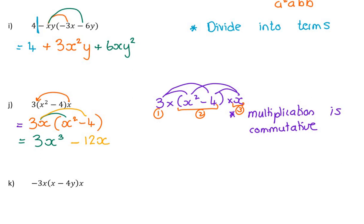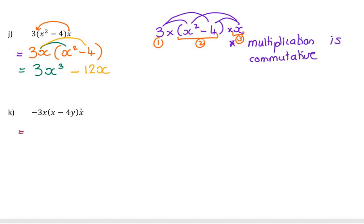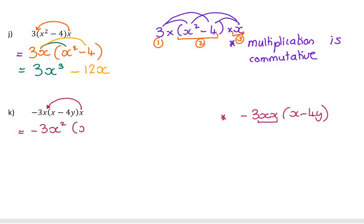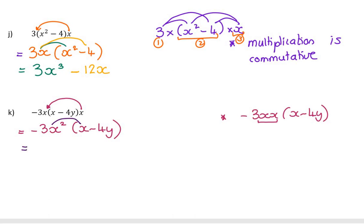That question was just meant to remind you about swapping order. For example k, I would first move the x to the front. Now notice this is going to be negative 3xx and then x minus 4y, but the best way to write xx is x squared — so this question is here to notice that we need to do some simplifying when we move that x. Now I can distribute in my minus 3: negative times positive is negative, 3, x squared times x is x cubed. And lastly, negative times negative is positive, 3 times 4 is 12, and x squared times y is just x squared y. They are not like terms.